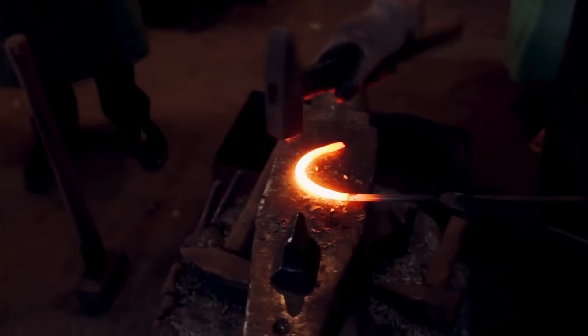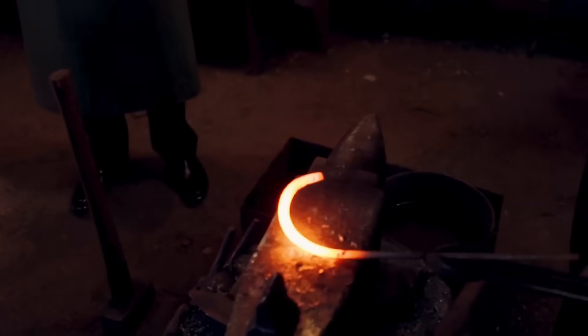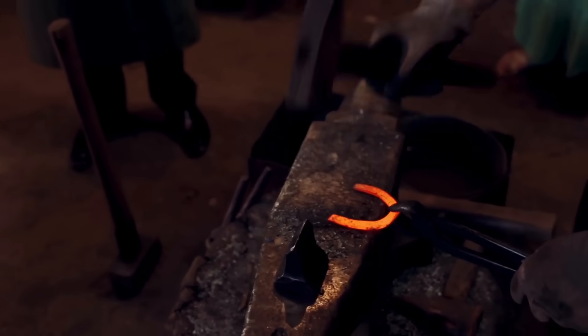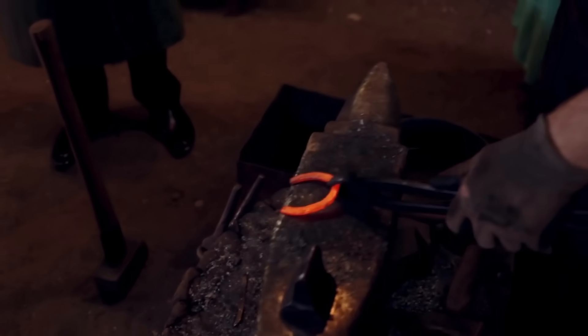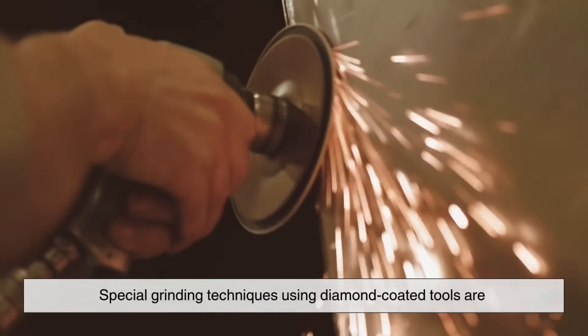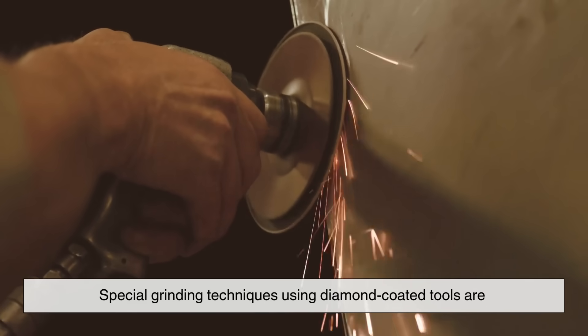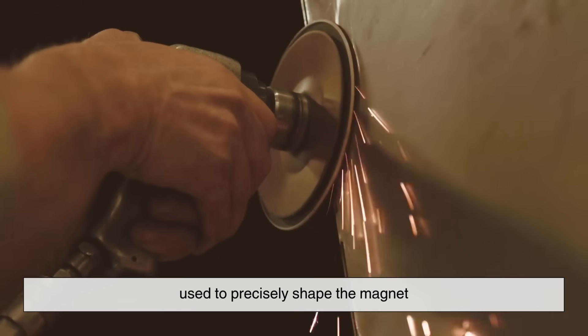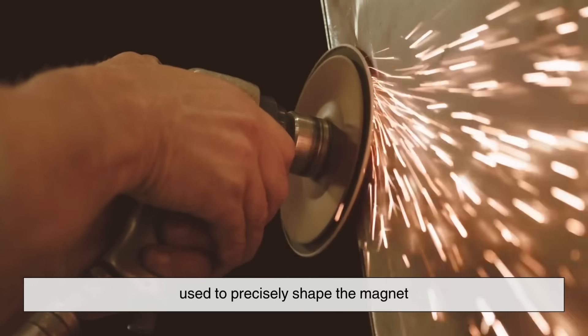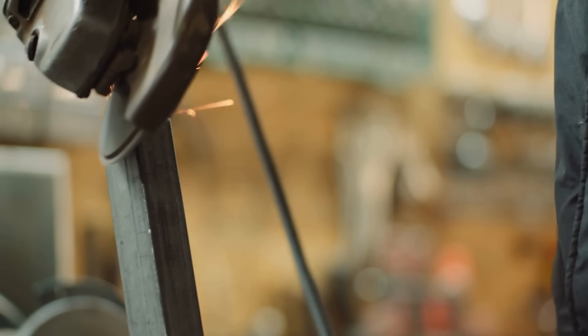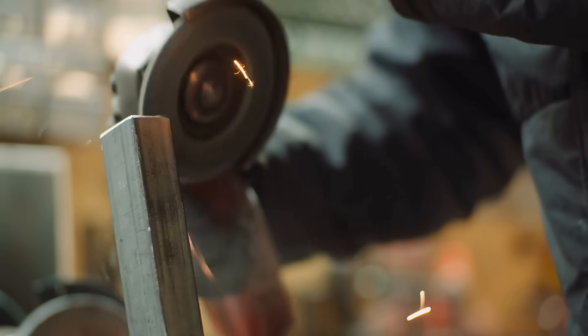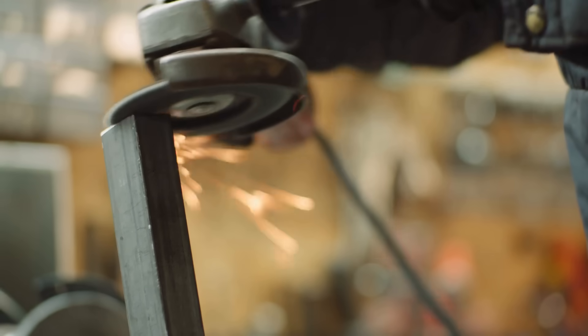Once the metal is properly treated, it's time to shape and refine it. Because Alnico is extremely hard and brittle, traditional machining techniques like cutting or drilling won't work well. Instead, special grinding techniques using diamond-coated tools are used to precisely shape the magnet. During this stage, any rough edges or imperfections are removed, and the magnet is refined to its final size and shape.